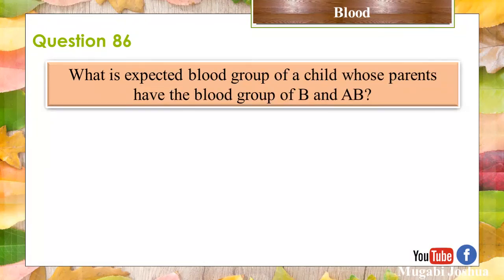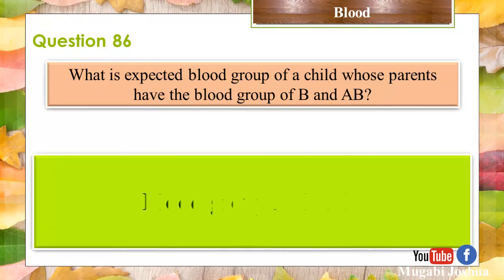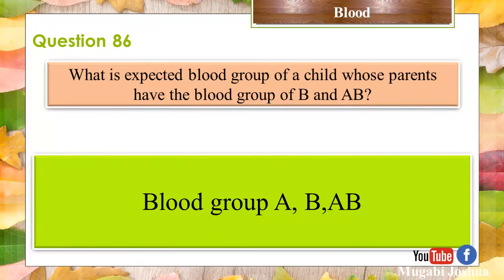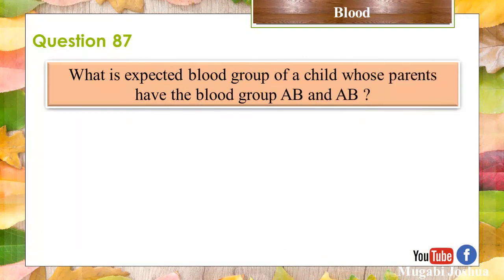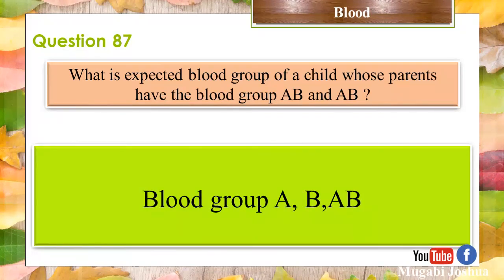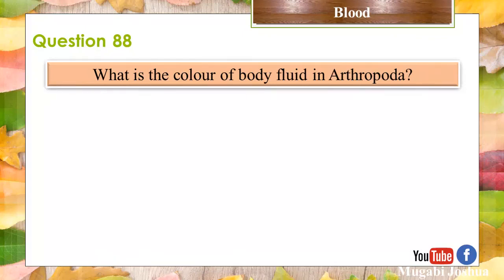Question 86: What is the expected blood group of a child whose parents have blood group A and B? Blood group A, B, AB, and O. Question 87: What is the expected blood group of a child whose parents both have blood group AB? Blood group A and AB. Question 88: What is the color of the body fluid in Arthropoda? Colorless.